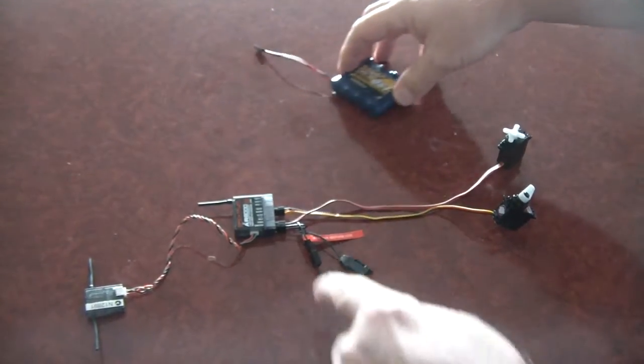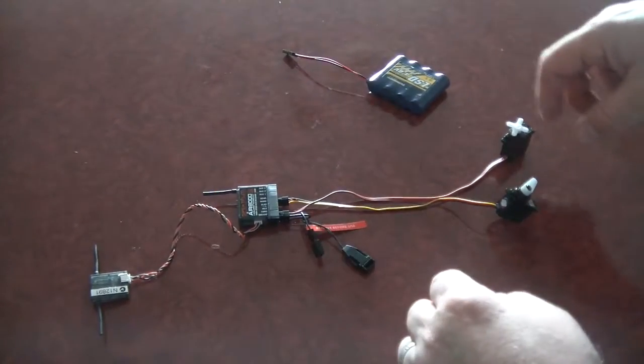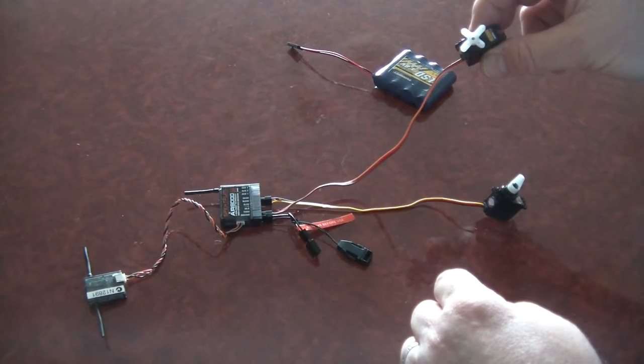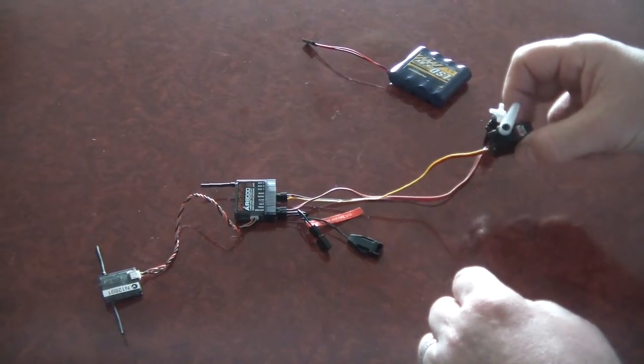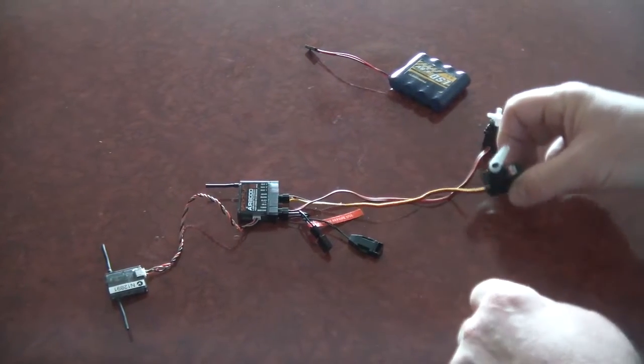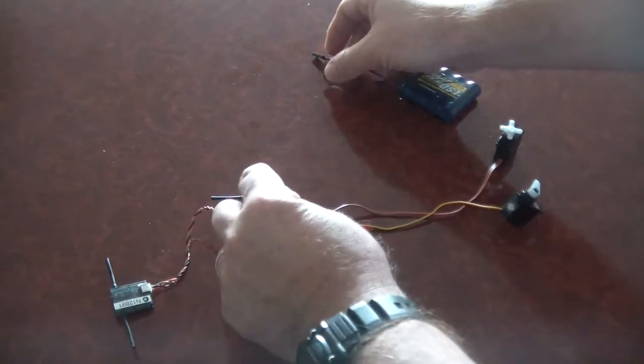Okay, what I'm going to do first is just a normal bind. So I've got the bind plug inserted. I've got this servo on the throttle channel and I've got this one on the gear channel, so that would be the channel you would use for mode selection and failsafe on the NAZA.